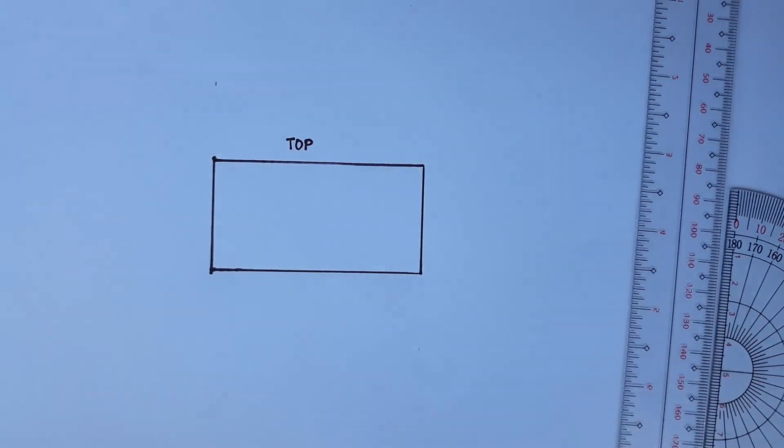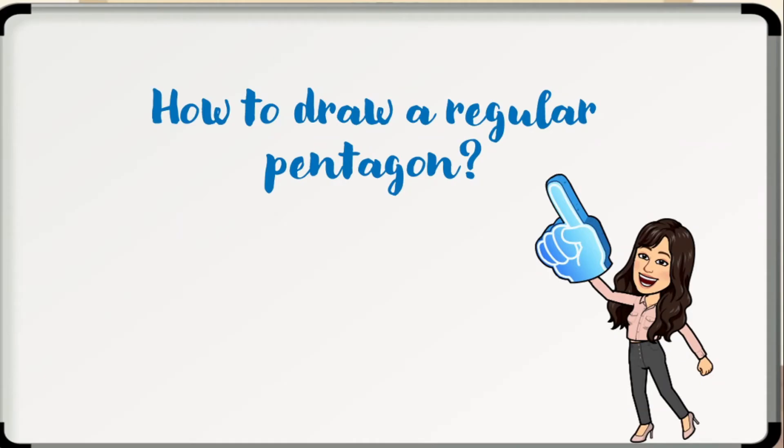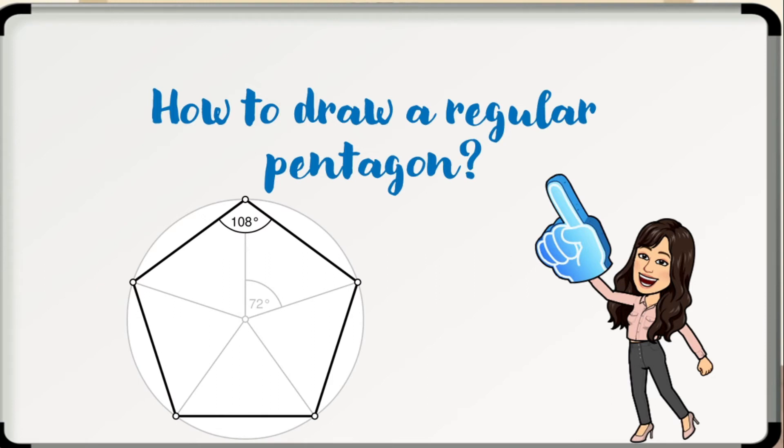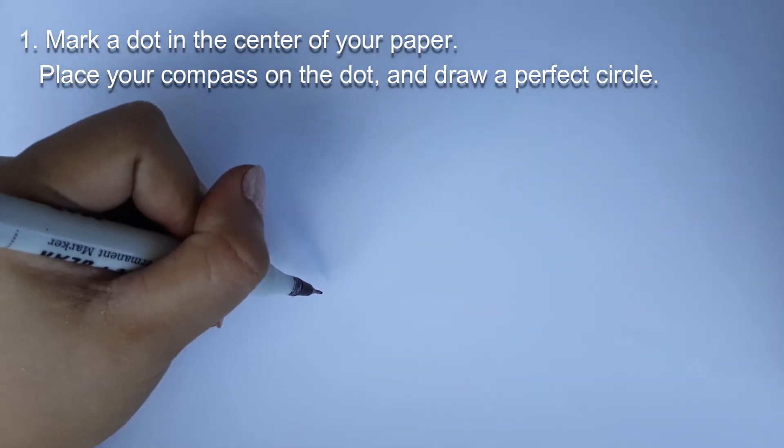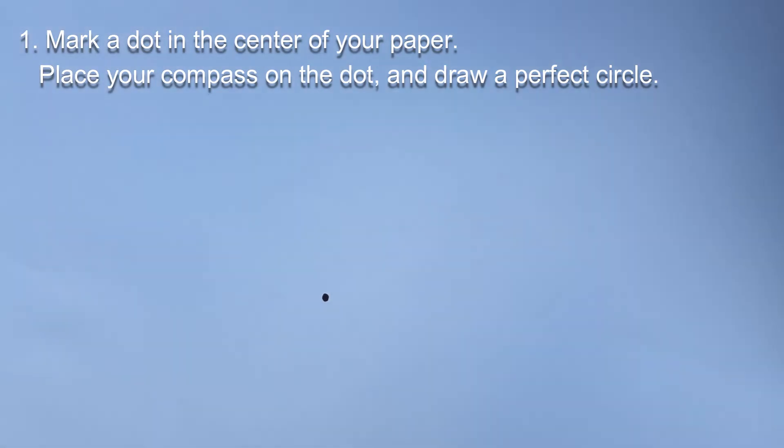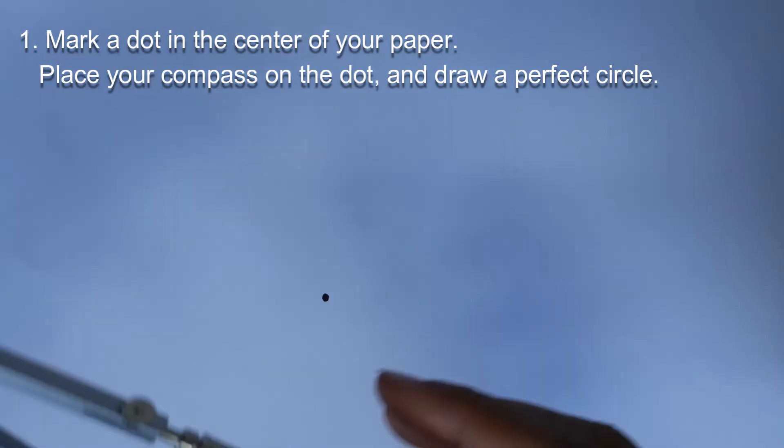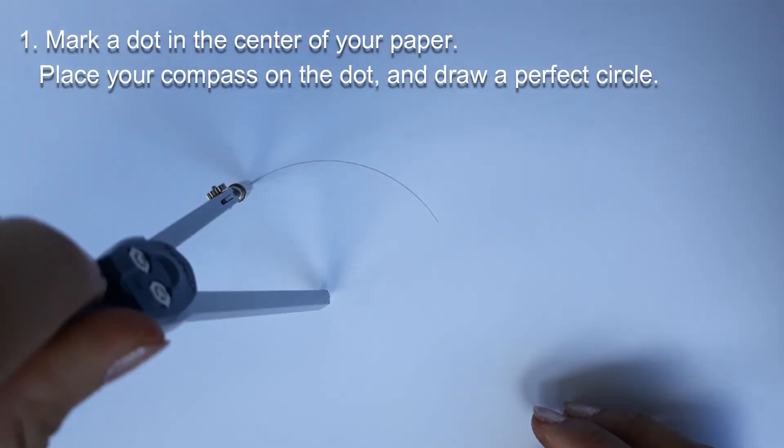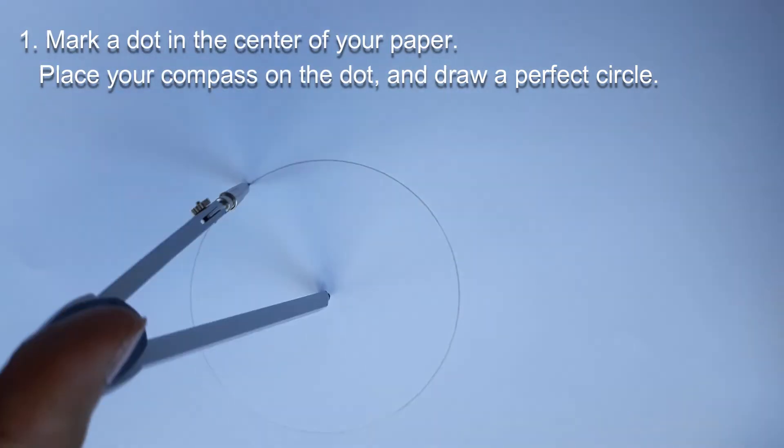How to draw a regular pentagon? A regular pentagon is a five-sided polygon with sides of equal length and interior angles of 108 degrees, or 3 pi over 5 radians. Because 5 is a Fermat prime, you can construct a regular pentagon using only a straight edge and compass. Step 1. The first step to draw a perfect pentagon is to mark a dot in the center of your paper. Place your compass on the dot and draw a perfect circle.